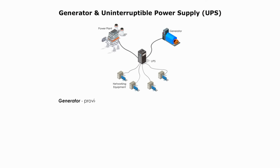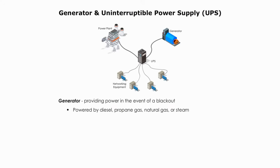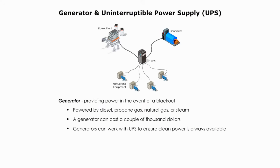Generators can provide electricity in the event of a blackout. They can be powered by diesel, propane gas, natural gas, or steam. They can be expensive — a decent generator can cost a couple of thousand dollars. Generators work with UPS together to ensure clean power is always available.